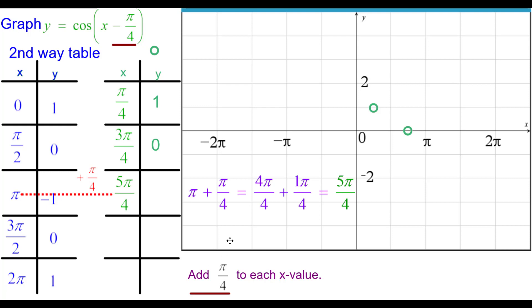Adding pi over 4 to pi is (5 pi over 4, negative 1). Add pi over 4 to 3 pi over 2, that's like 6 fourths plus 1 fourth is (7 pi over 4, 0). Plot that.